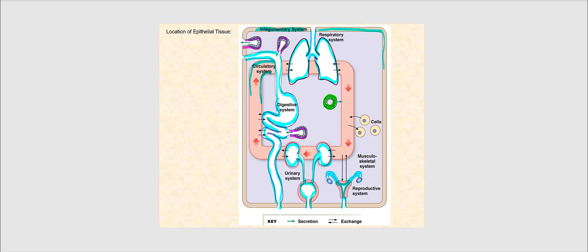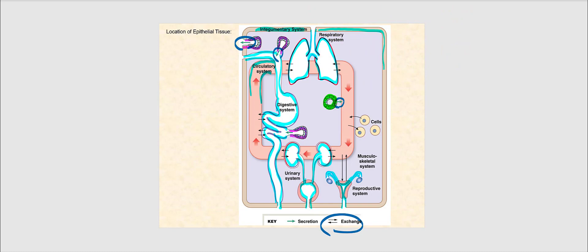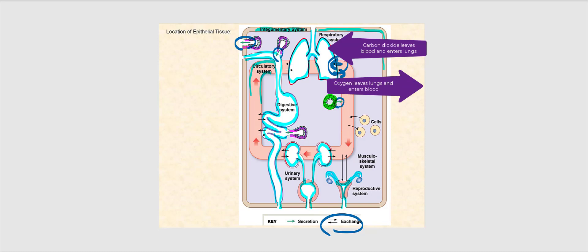Another thing to notice is secretion and exchange. Secretion involves products such as mucus, hormones, and digestive enzymes being discharged — endocrine glands also secrete by releasing products. Exchange is represented by arrows going back and forth. A classic example is gas exchange at the lungs: carbon dioxide enters and oxygen leaves, representing an exchange of gases. Details will be covered in the respiratory system next semester.